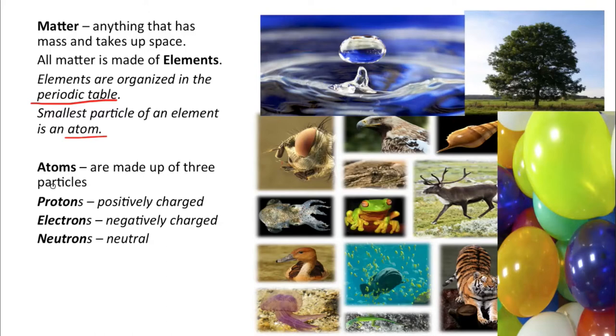Now each atom has three different particles or subatomic particles, if you want to impress your friends and use a big word. Protons are positively charged particles inside of an atom. Electrons are negatively charged particles, and neutrons are then therefore neutral. They don't carry a charge.